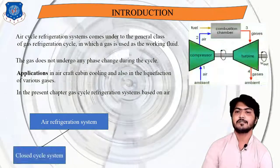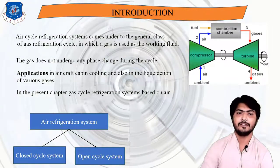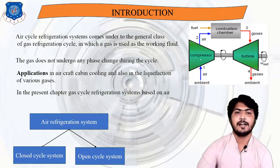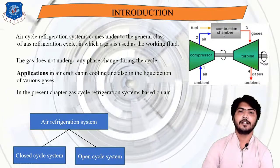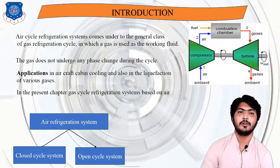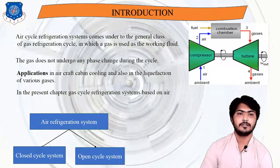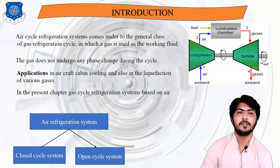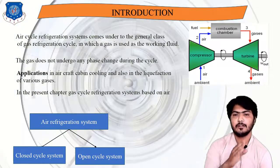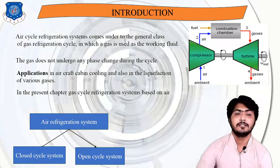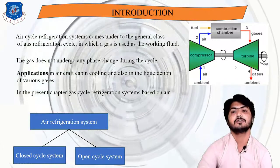Air refrigeration systems are basically of two types: first is closed cycle, and second is open cycle. In the open cycle, air passes into the compressor, compressed air is transferred to the combustion chamber where fuel is burnt, and burnt gases are supplied to the turbine to obtain work, with remaining gases released to the atmosphere. In a closed cycle, the burnt gases are reused again.